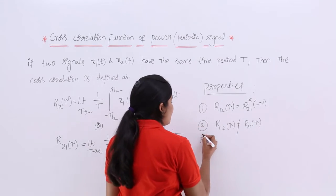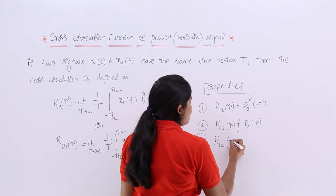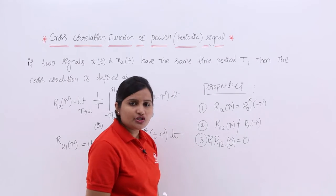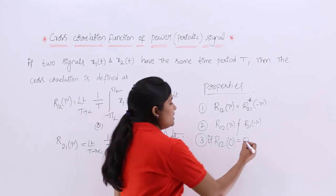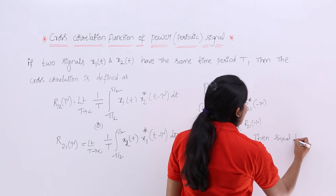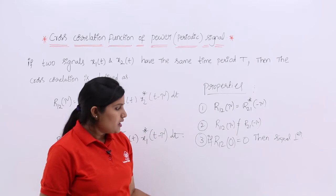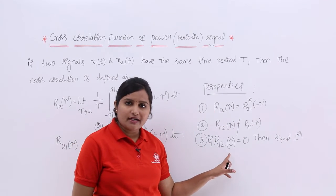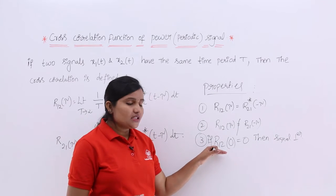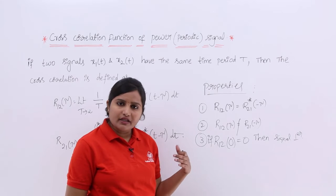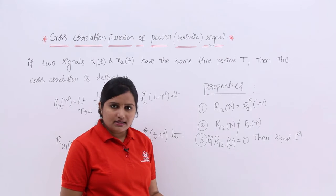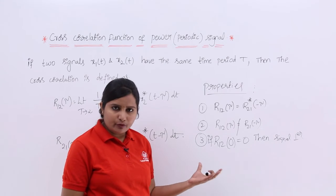The third property: if the cross correlation function at the origin equals zero, then the signals are said to be orthogonal — or perpendicular — to each other. Similarly, if the auto correlation function at the origin equals zero, then the signals are said to be orthogonal. A proof for this was already done in the properties of cross correlation and auto correlation for energy signals in previous classes.